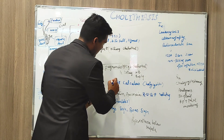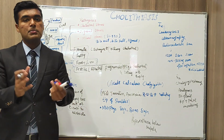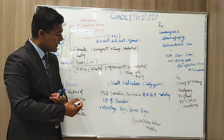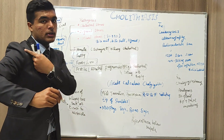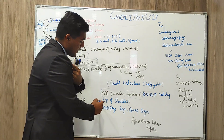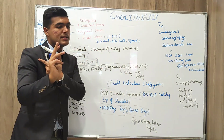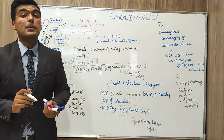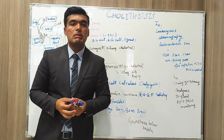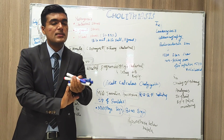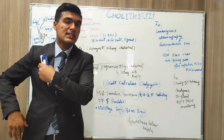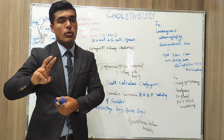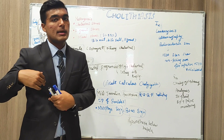Now we move towards the signs and symptoms seen in a patient presenting with gallstones. These include mild jaundice, anorexia, and right upper quadrant pain that radiates to the tip of the shoulder. Murphy's sign is an inspiratory arrest due to deep palpation of the right upper quadrant, occurring when the gallbladder touches the parietal peritoneum causing pain. Boas sign is hyperesthesia of the skin below the scapula.